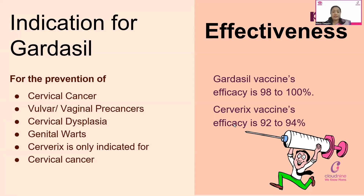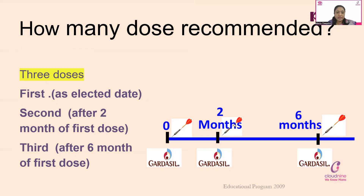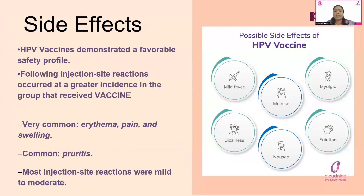The efficacy of Gardasil is 98 to 100 percent, whereas Cervarix is 92 to 94 percent. This vaccination can be given to any girl from the recommended age of 9 years up to 45 years. The most effective time to vaccinate is before girls become sexually active, since HPV spreads through sexual activity. Three doses of Gardasil are recommended: at month zero, month two, and month six.